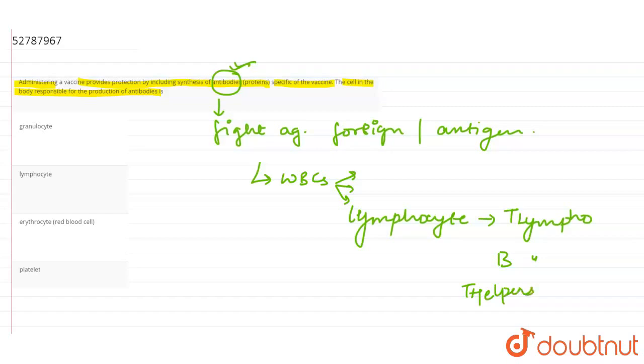Inka further bhi classify hum kar sakte hain but lymphocytes are mainly responsible for causing antigen. Agranulocytes kya hote hain ye bhi fight karte hain in mein chhote chhote granules hote hain. Thik hai lymphocyte ka classification de diya - T lymphocyte, B lymphocyte. Erythrocytes hamare RBCs carry karte hain oxygen.